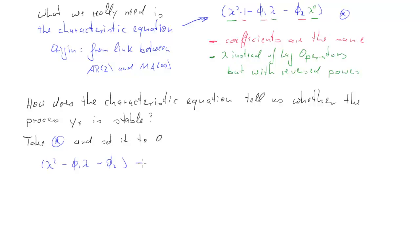Let me just state that here, here's the polynomial, and we set that to be equal to 0. Now this is really the characteristic equation.